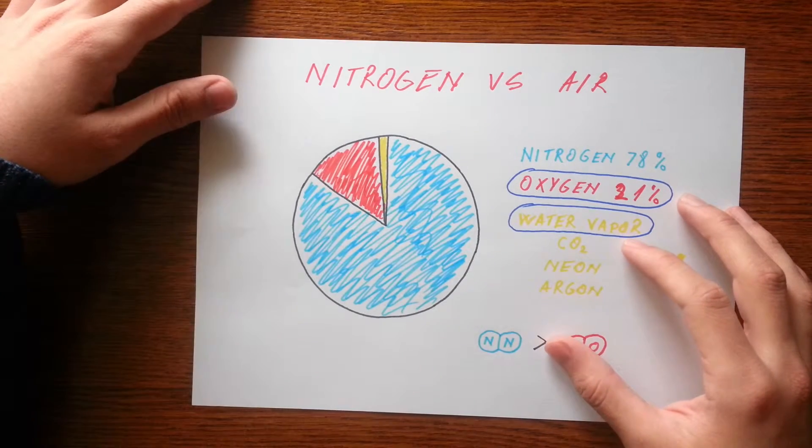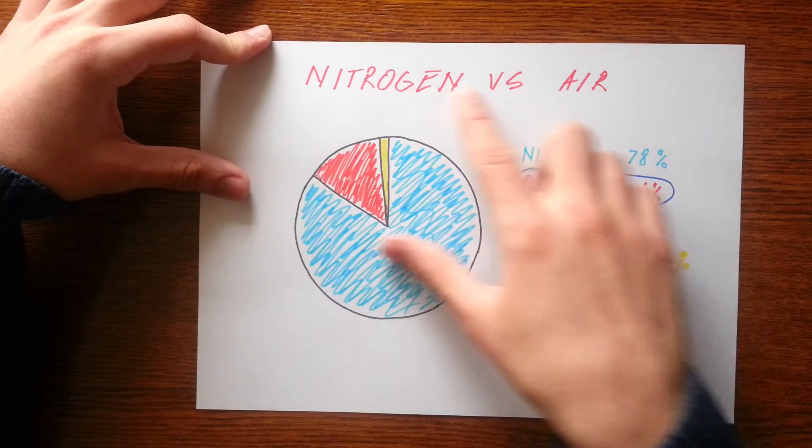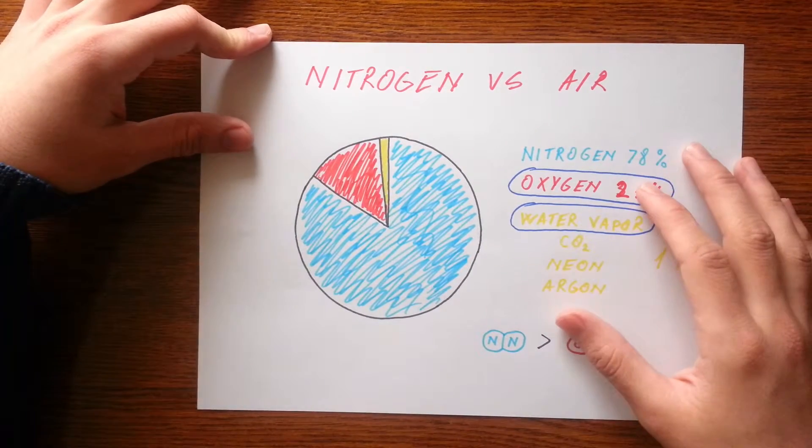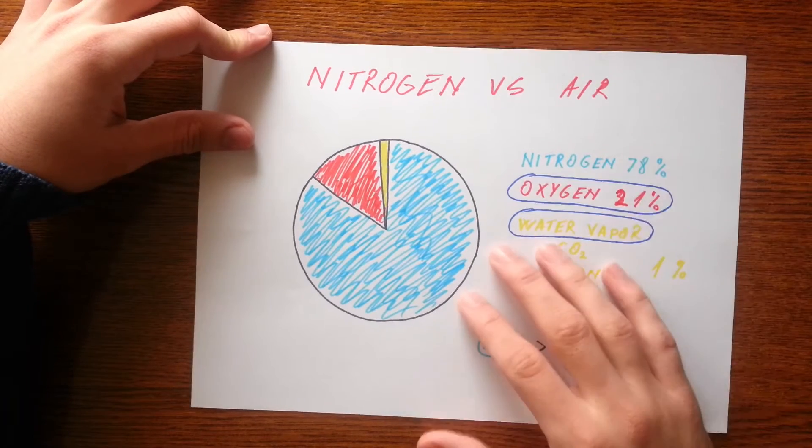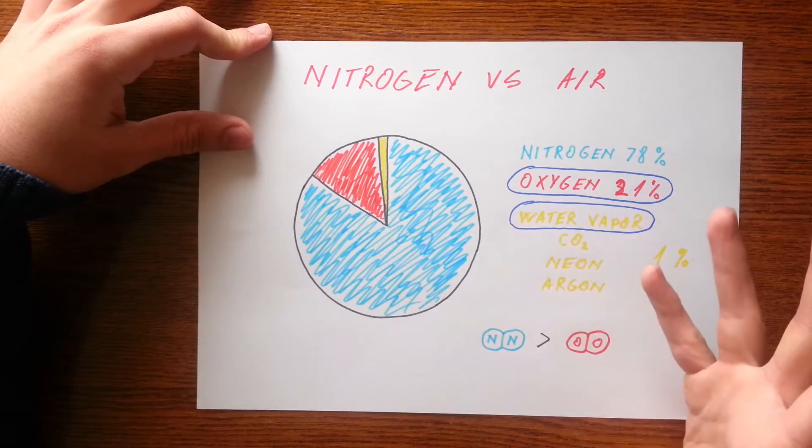Hey guys, so today we're gonna talk about the difference between nitrogen and air inside the tire. We know that in Formula 1 tires are filled with 100% pure nitrogen to boost performance and reliability. So why should we do it?